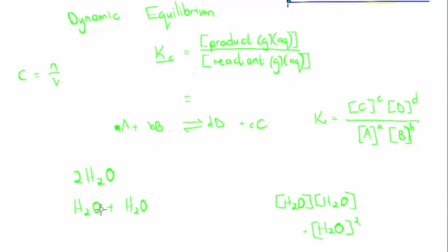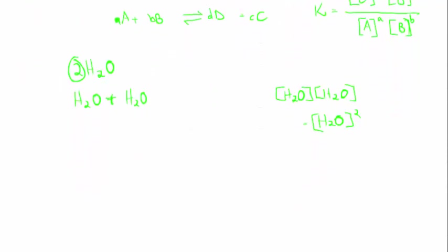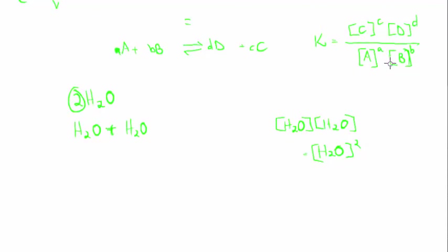The reason why it's to the power of its coefficient is because if I had something like 2H₂O as a product, it is actually H₂O plus H₂O, which in the expression becomes H₂O times H₂O, which we write as H₂O squared. I think it has something to do with log laws — when you add logs, you multiply the interior — something to do with why the plus becomes a multiply and the coefficient becomes an exponent.